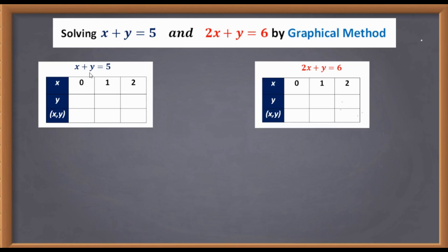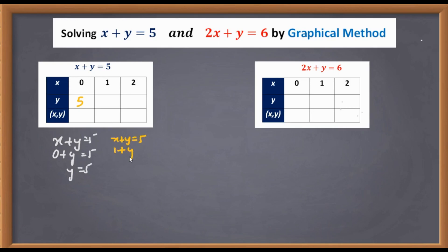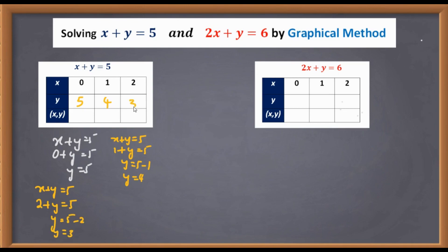Now we substitute x equals 0 in equation 1: x plus y equals 5. When x is 0, y is 5. When x is 1, substituting gives y equals 4. When x is 2, y equals 3 because 5 minus 2 is 3. So the three points for the first equation are (0, 5), (1, 4), and (2, 3).